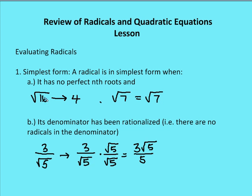The squiggly sign over the radicand is called the radical sign. We want to make sure the radicand has no perfect square factors. In this case, 16 is a perfect square, so we simplify by removing the perfect square root: the square root of 16 equals 4, and that's in simplest form.